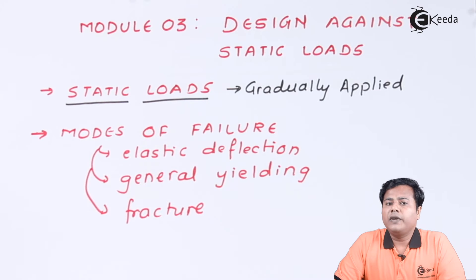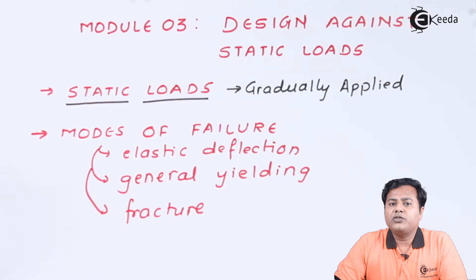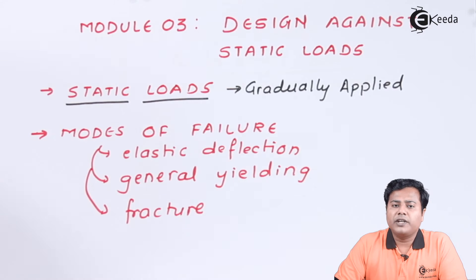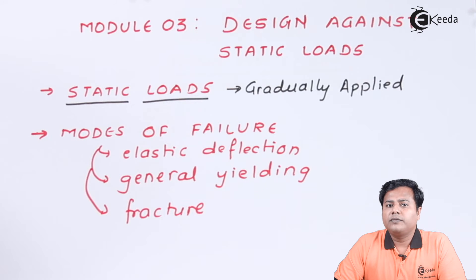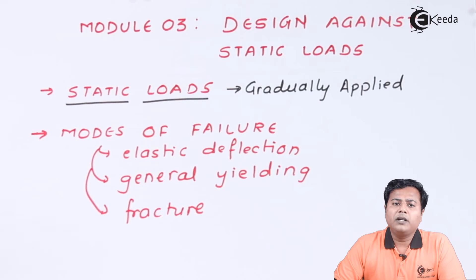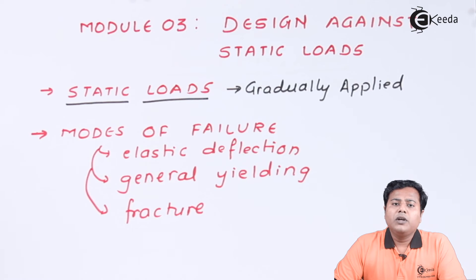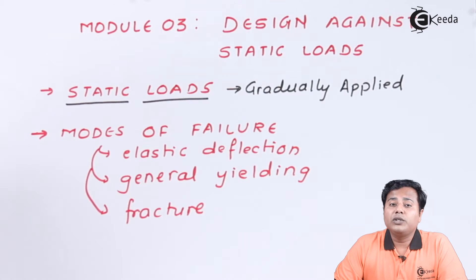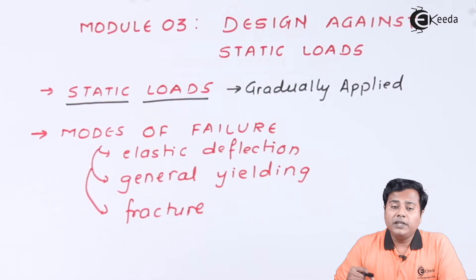What are the modes of failure when discussing gradually applied loads? They have certain effects like elongation, stress, and strain. All these effects are gradual and may lead the part to failure. Failure may happen or may not happen — these are two different aspects. We have to design the component considering that it is going to fail under a certain load, so that if that load is applied, the component will not fail.